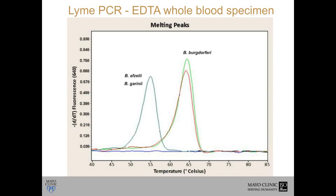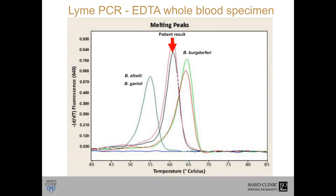Remember I mentioned that whole blood is not a very sensitive specimen for detecting Lyme disease — but in this case, it's a good thing they ordered it. Instead of seeing a melting temperature peak for one of the known pathogens — Borrelia afzelii, garinii, or burgdorferi — we saw a peak in the middle. This was a clear, reproducible positive that fell outside the range of known organisms our assay looks for. Because this test detects all members of the Borrelia burgdorferi sensu latu complex, we were pretty sure this was a member of the complex, just not a familiar one.